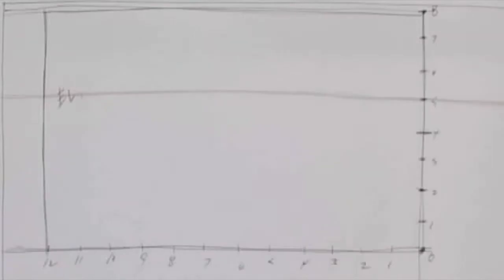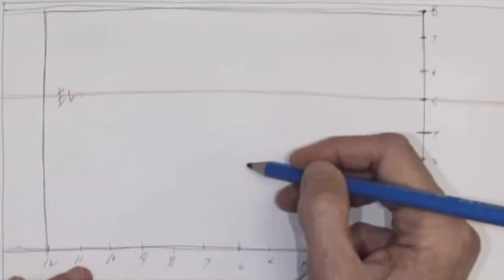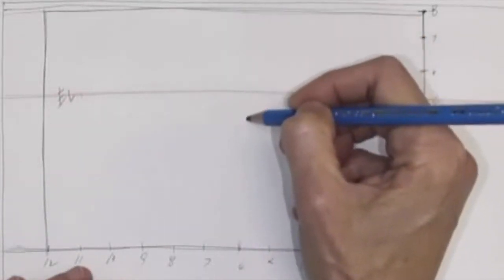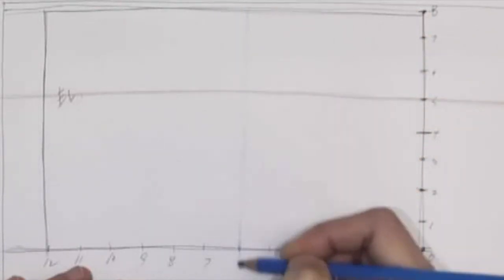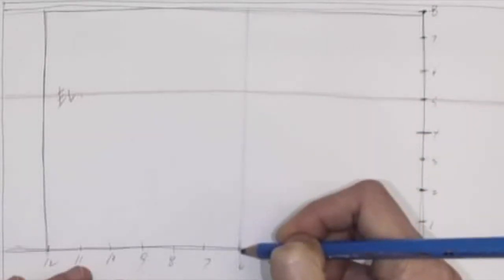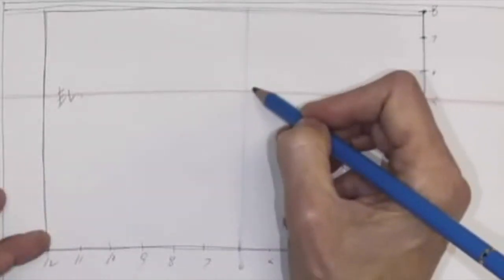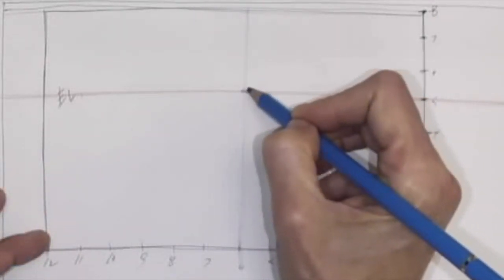And our vanishing point is going to go at 6 feet. It's in the center, so we can come up from 6 feet. And put your vanishing point right there.